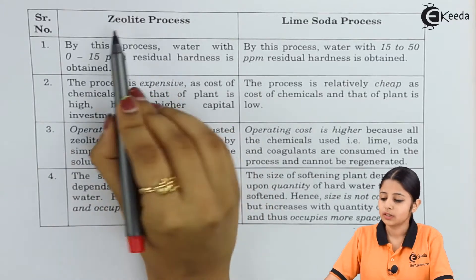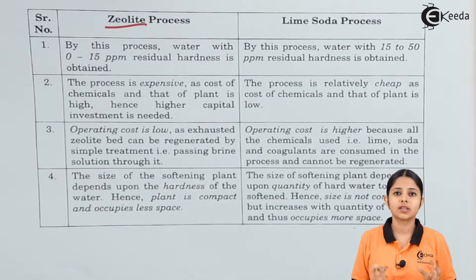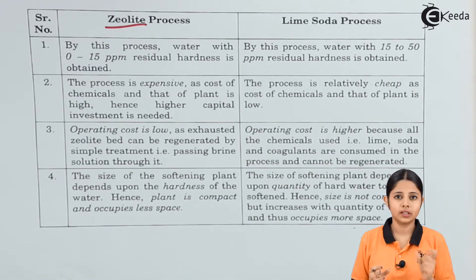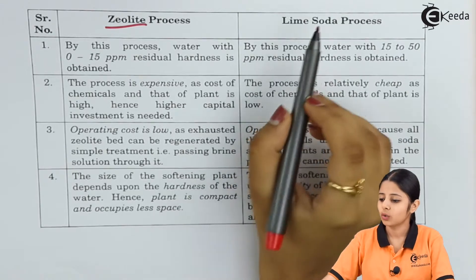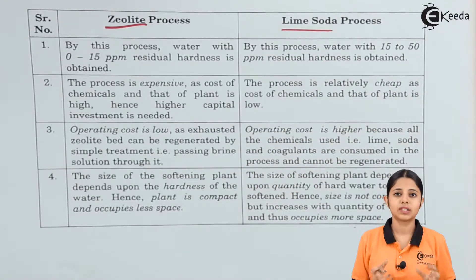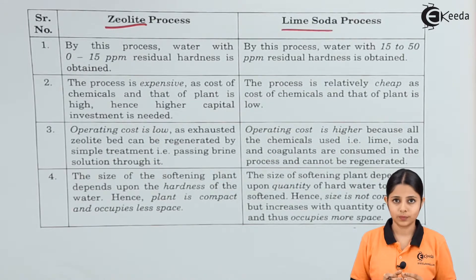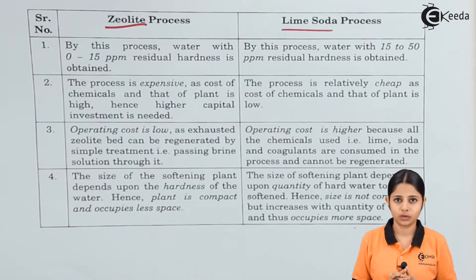The first process is the zeolite process, also known as the permutite process or zeolite permutite process. The second one is the lime soda process. Both these processes take permanent hard water and convert it into soft water.